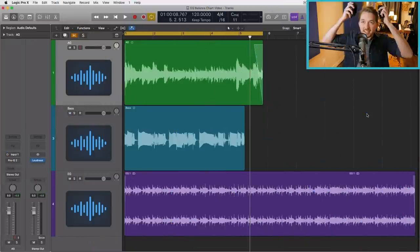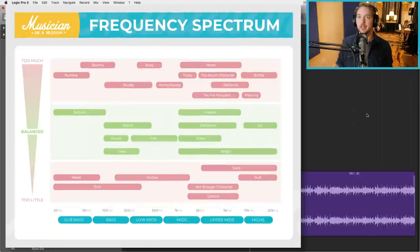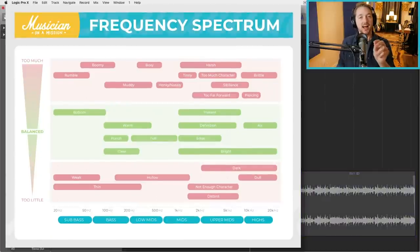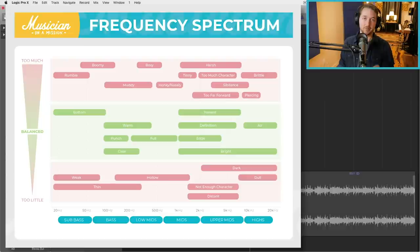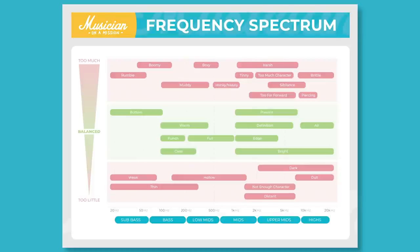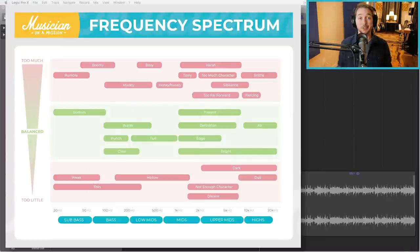And that's because this is like the foundation of EQ, being able to hear a problem, knowing where that problem lives in the frequency spectrum, and then being able to solve that problem. So let's go through a few examples so that you can see this in practice. So first, let's look at this acoustic guitar. I'm going to put the balance chart back up, and I want you to listen, and I want you to think, how would I describe this sound? And then look for that word or a synonym of that word in the balance chart. So what words did you use whenever you were describing this sound? Well, the main word that I used was boomy. It sounds too boomy to me. So let's look at our balance chart. Where does boomy live?